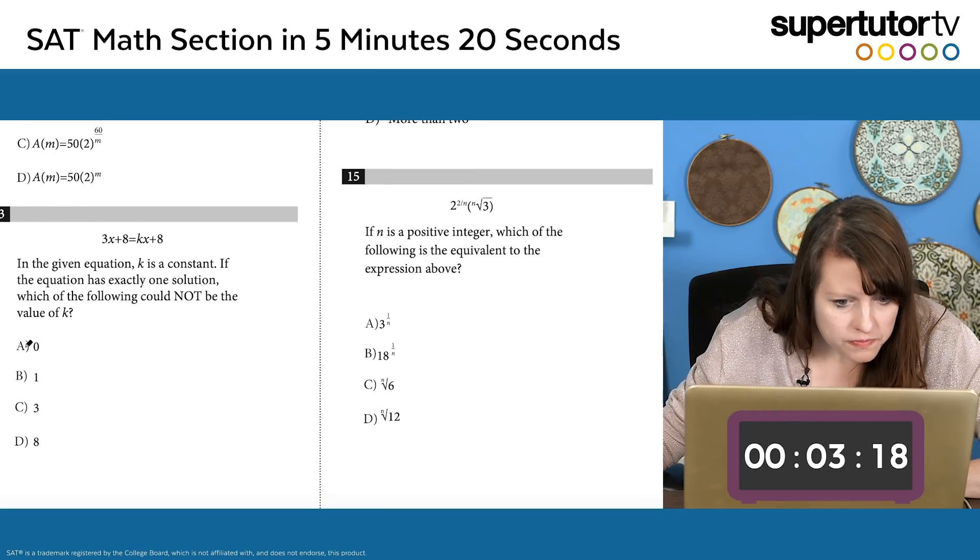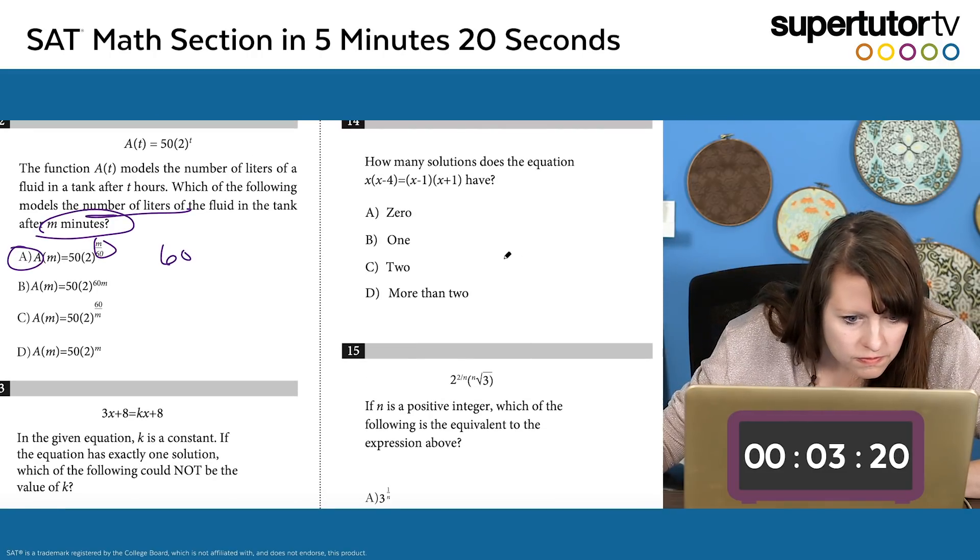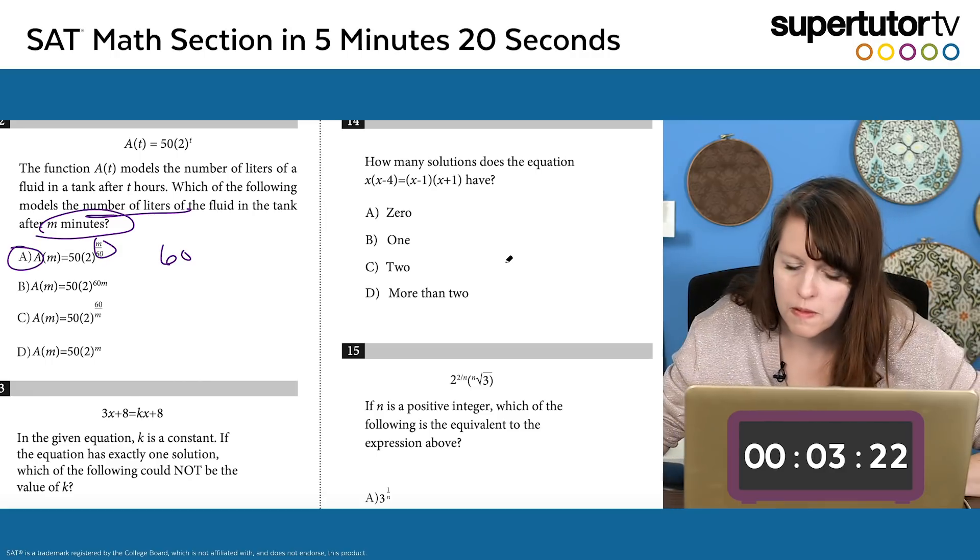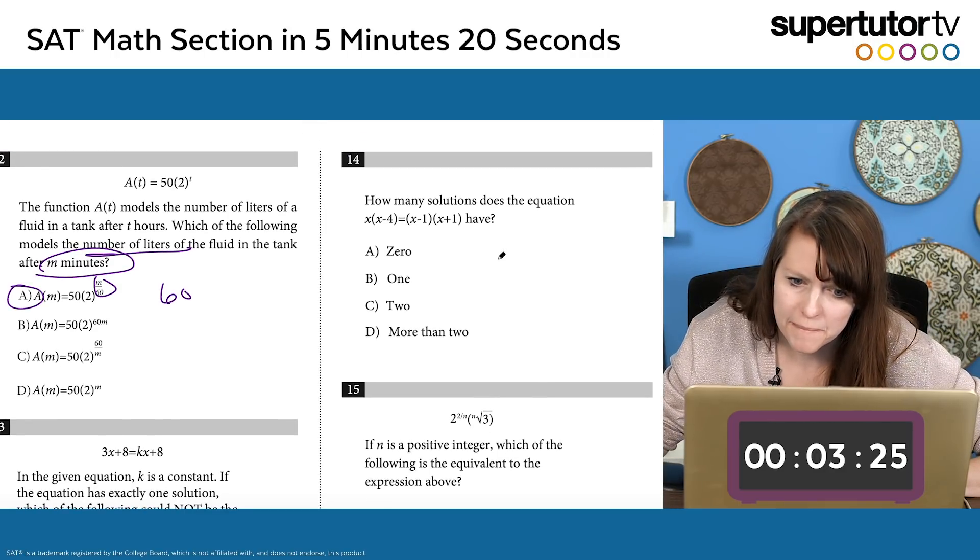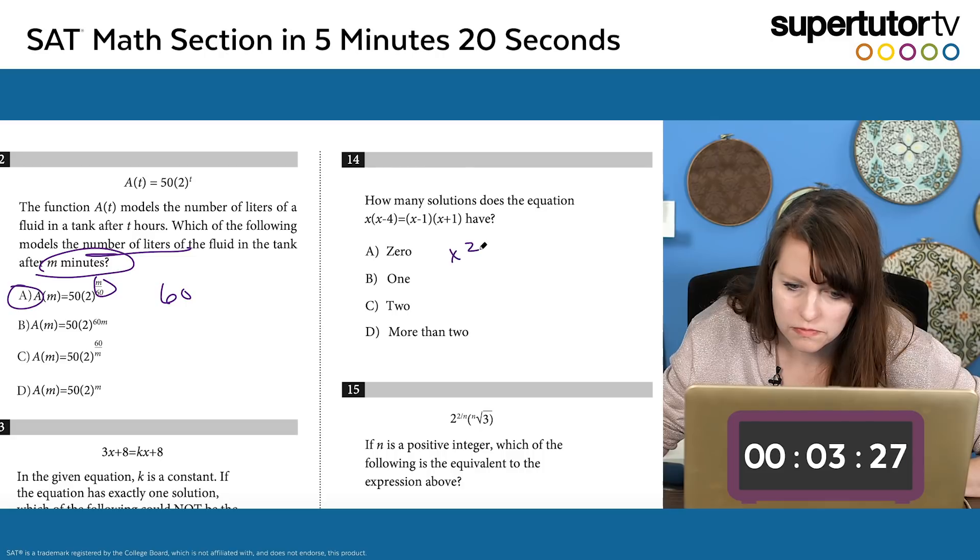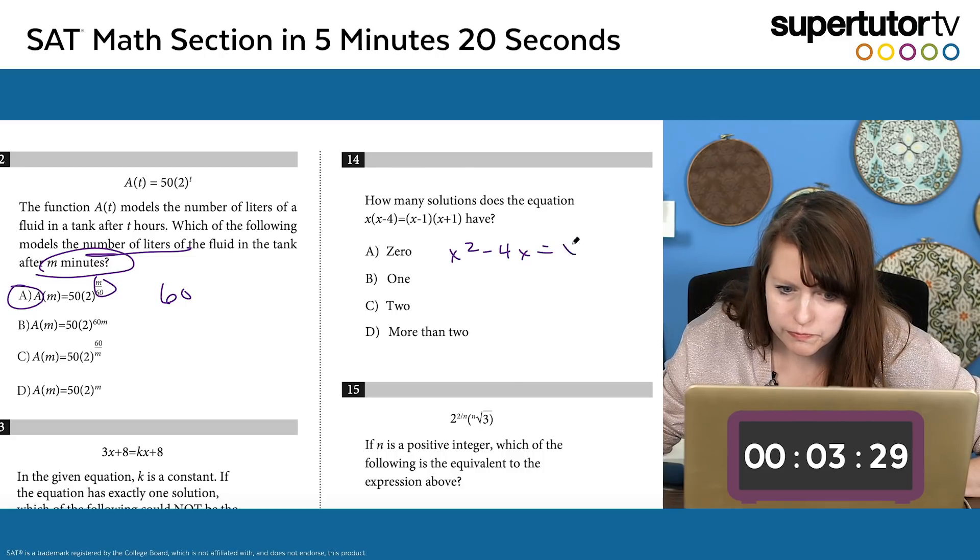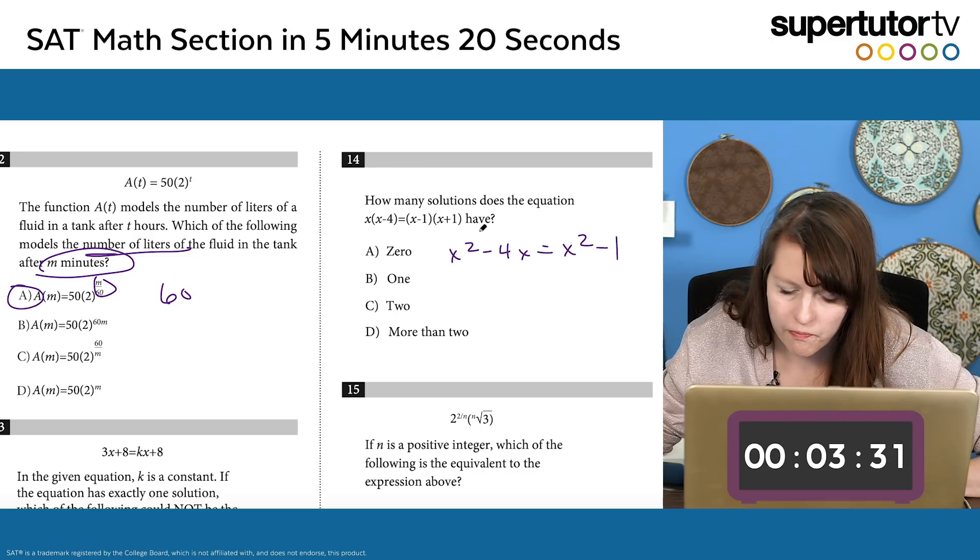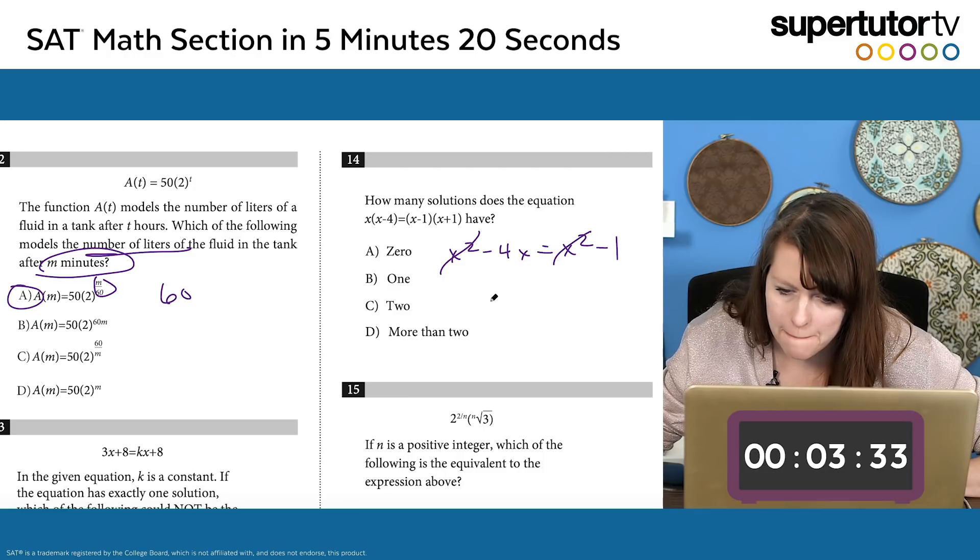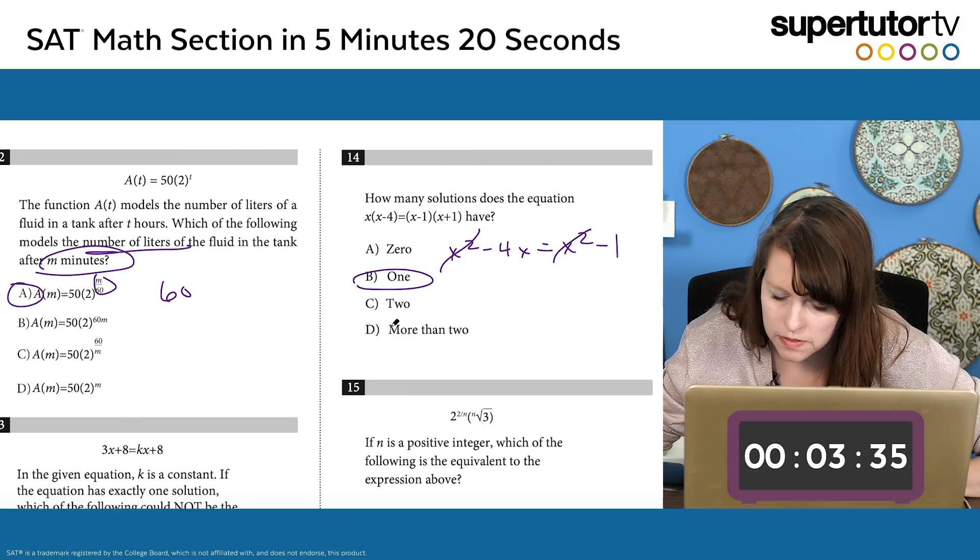Number 13. I only want exactly one solution and it could not be the same slope if you have one solution, so three is the answer here. How many solutions does the equation this have? So I'm just going to expand it. x squared minus 4x equals x squared minus 1. That's a special product and that's how I get that so fast. The x squareds cancel. That's a typical linear equation. It'll have one solution. I don't have to even do the extra work.